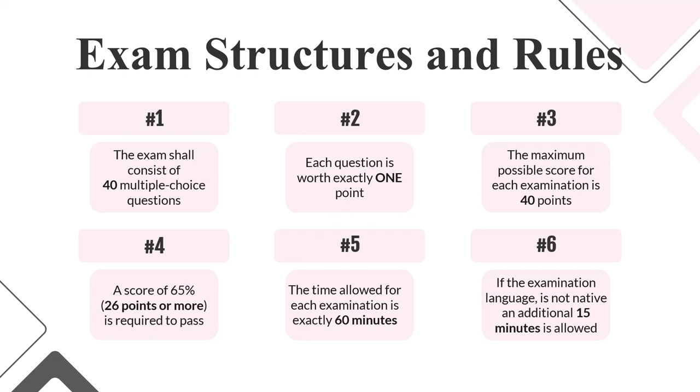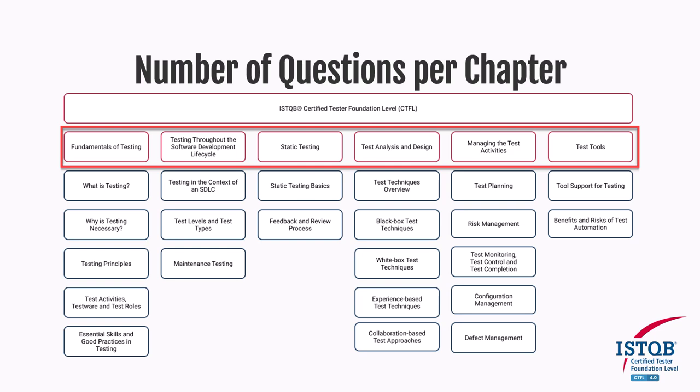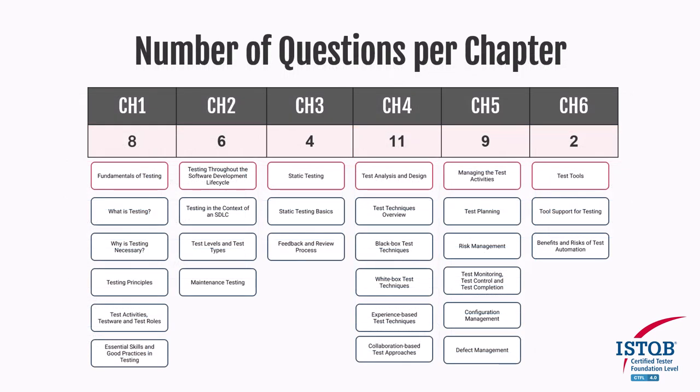The six chapters do not have the same number of exam questions. Eight questions relate to Chapter 1, Fundamentals of Testing. Six questions cover Chapter 2, Testing Throughout the SDLC — the first two chapters are the easiest as their questions are logical. Four questions cover Chapter 3, Static Testing. Eleven questions come from Chapter 4, Test Analysis and Design. Nine questions come from Chapter 5, Managing the Test Activities. Together Chapters 4 and 5 make up 20 questions, which is half the exam. Only two questions relate to Chapter 6, Test Tools — for a total of 40 questions.